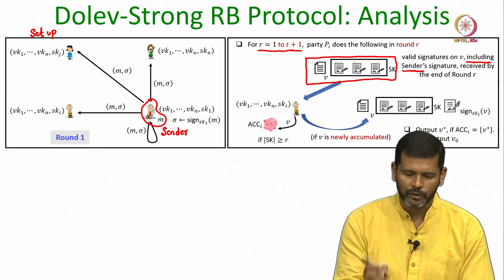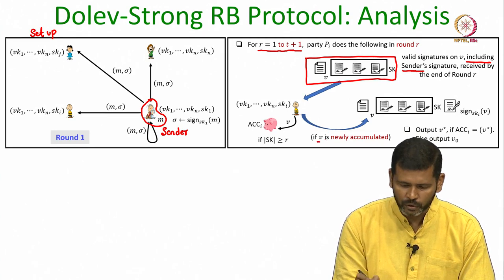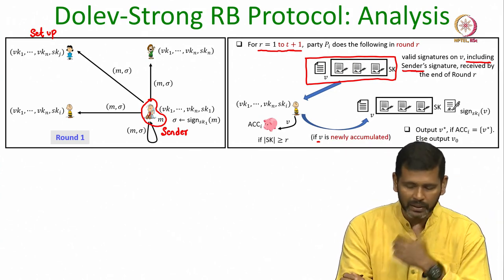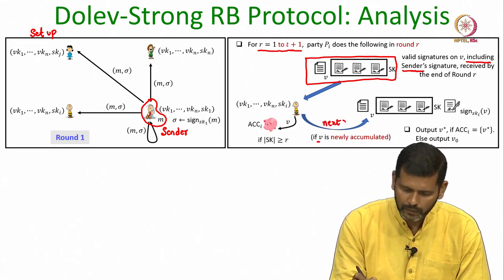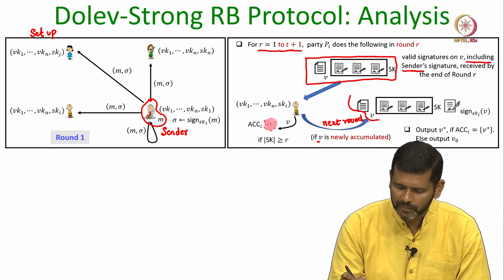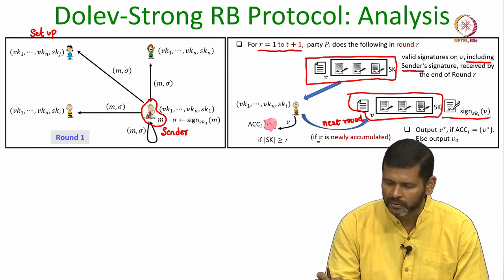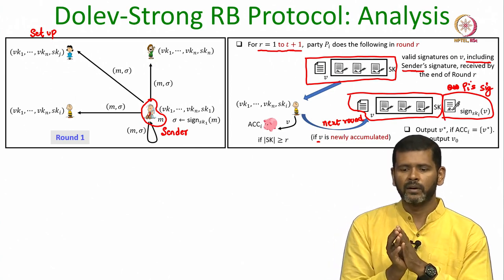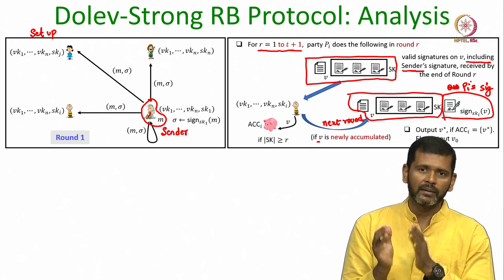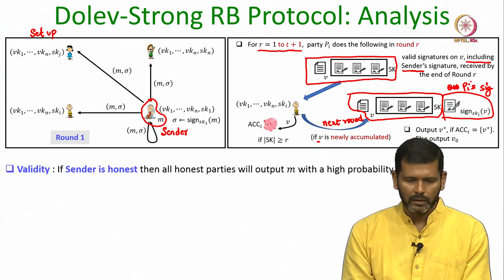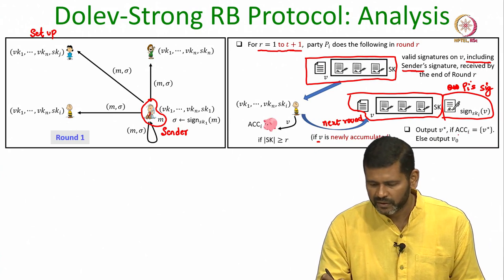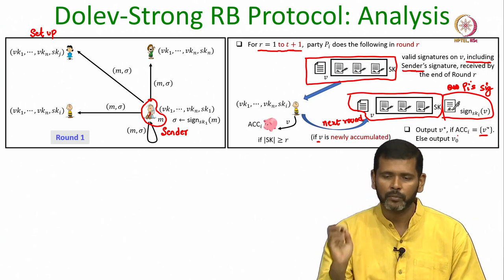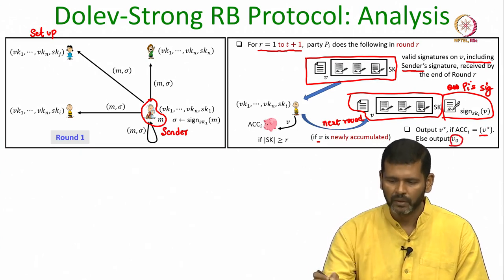In round R, where R varies from 1 to t plus 1, every party PI does the following: it checks whether there are at least R signatures from R different parties available on any value V, including the sender's signature. If that is the case, it accumulates V. If this value V is accumulated for the first time in round R, then in the next round it relays the collection of signatures along with its own signature PI, so the number of signatures on V is now R plus 1. The decision rule is: if only one value has been accumulated, output that value; otherwise output a default message.